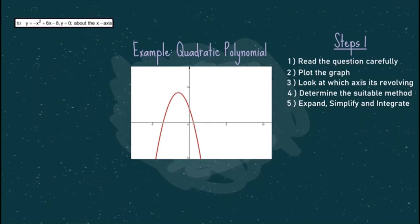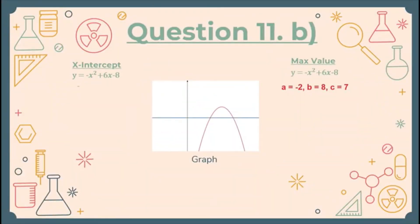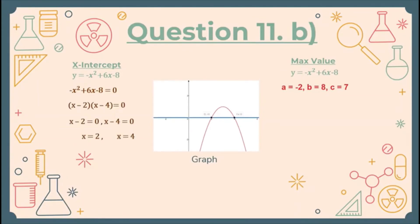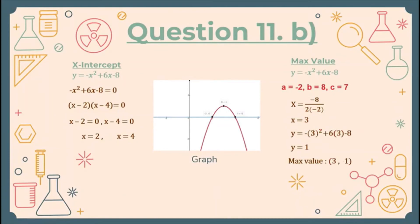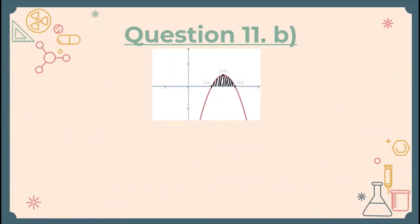To know exactly where the graph is located, we find the x-intercept and the maximum value. To find the x-intercept, make y equal to 0 and factorize the equation to get the values of x. For the maximum value, use the formula negative b divided by 2a, giving x equals 3. Substitute x into the equation to get the maximum point. The disk method is the most suitable method here.